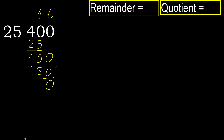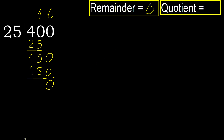Next — there is no number, therefore finish. 0 remainder, therefore 400 divided by 25 equals 16.